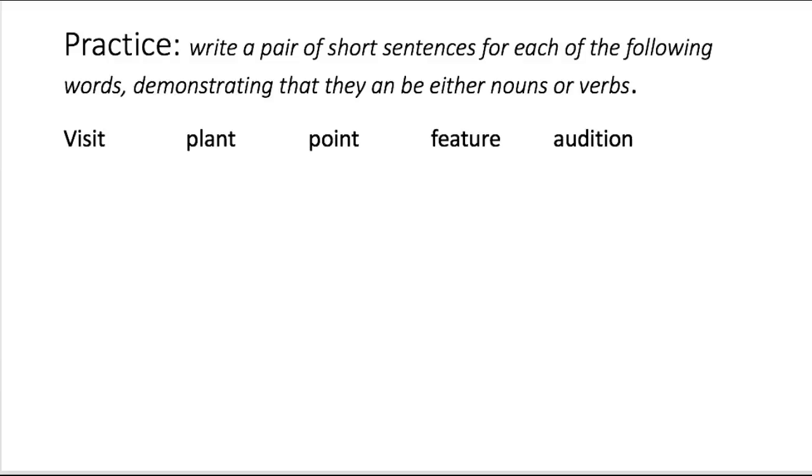Okay, so we're gonna do a little bit of practice. I want you to pause the video and take a minute or two to write a pair of short sentences for each of the following words, demonstrating that they can be either nouns or verbs. So let's take a look at the word audition. You could say something like, my audition for the play went well. In that case audition is a noun. Or you could say that at six o'clock I will audition for the play. In that case audition is a verb. So go ahead and write your sentences and then compare them to your classmates. And when you are done, turn back on the video.